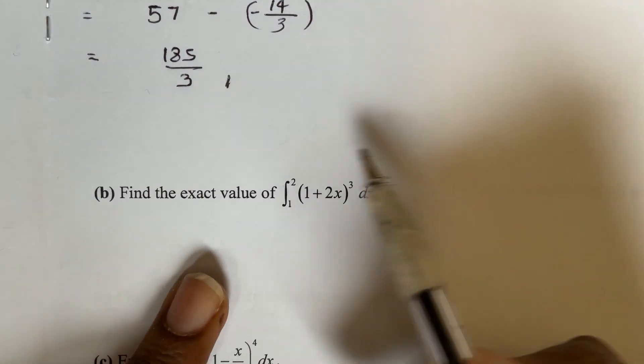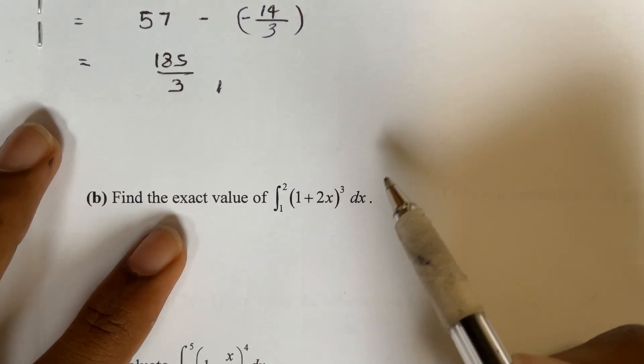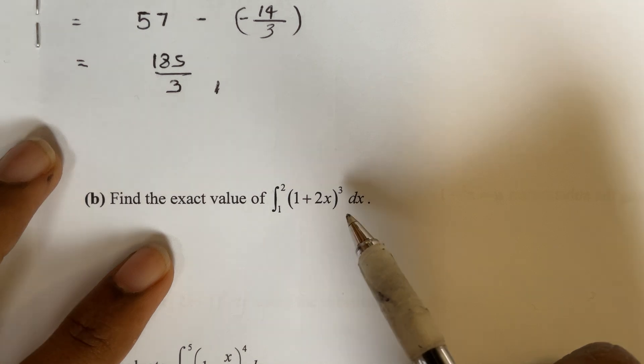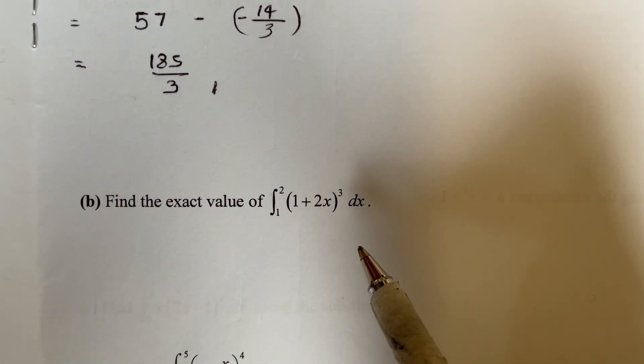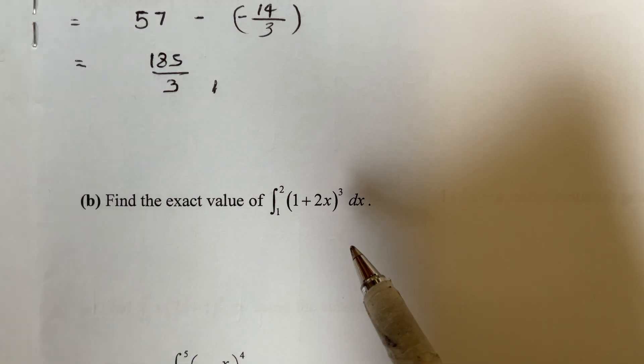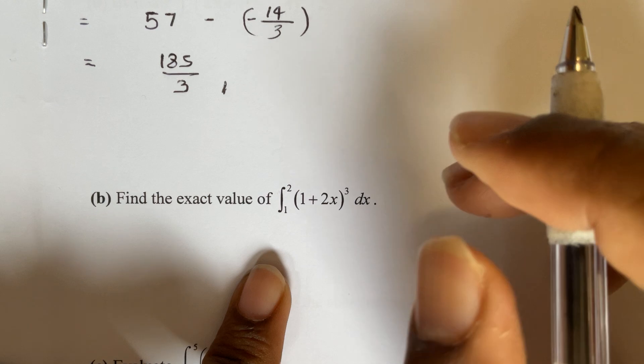The first method that obviously everyone's going to try and do is use the a plus b whole cubed identity, so a cubed plus 3a squared b plus 3ab squared plus b cubed, but that's not necessarily the smartest thing to do here because this is basically just power.